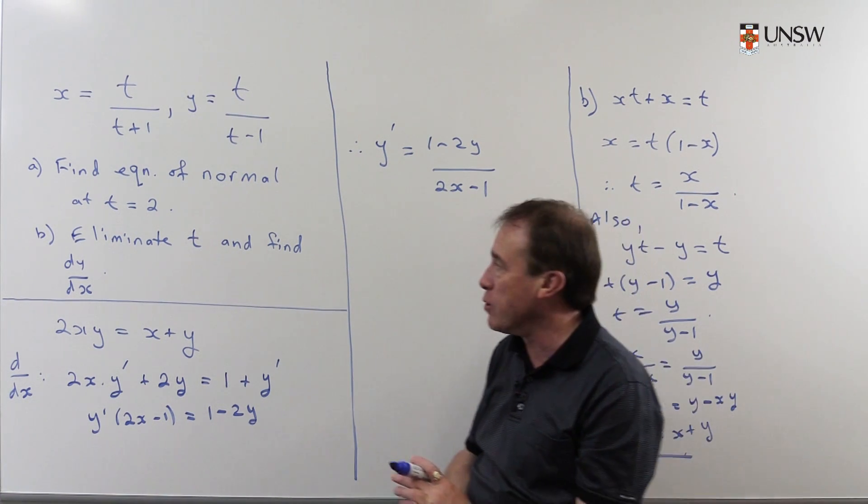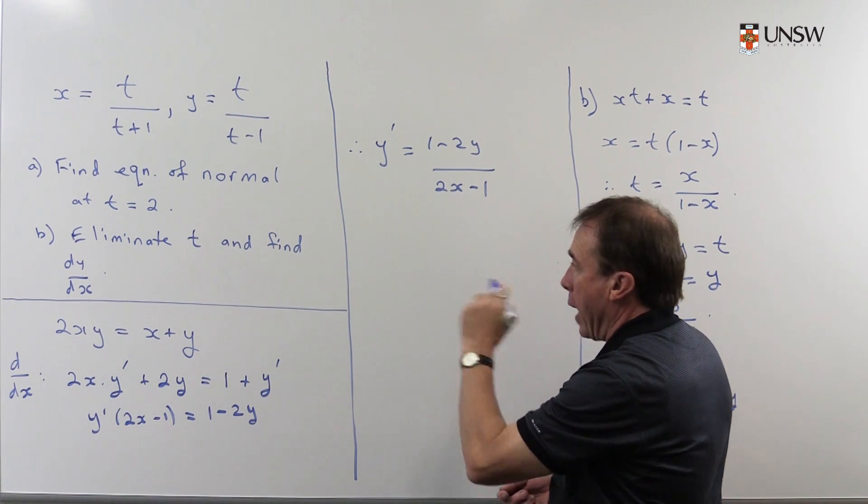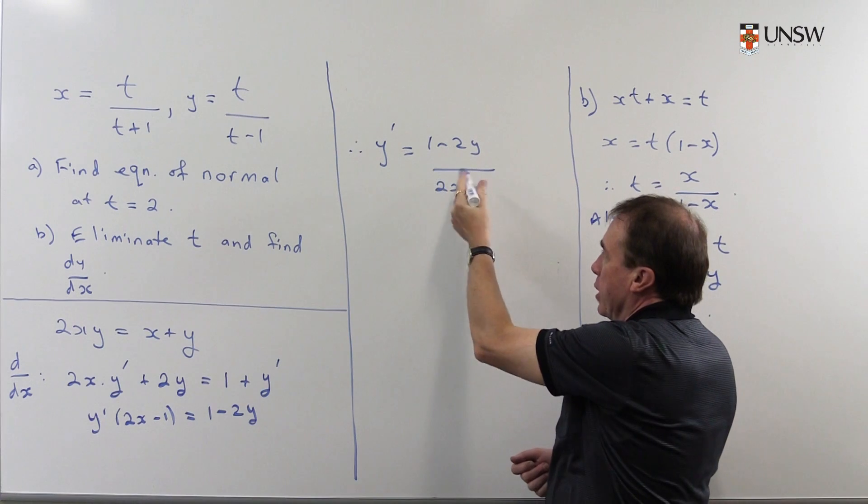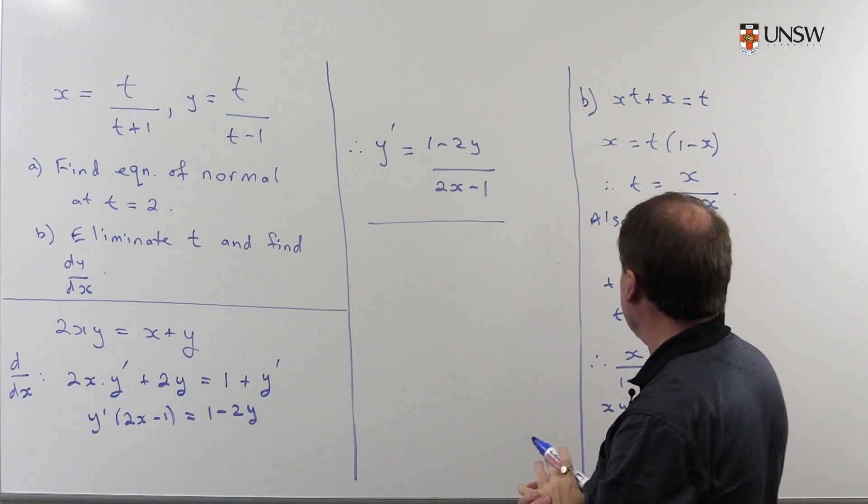I'll leave you to finish off the rest of the problem. Which was to evaluate this at the point t equals 2. Substituting in the points and getting the gradient of the normal. Which we calculated before anyway.